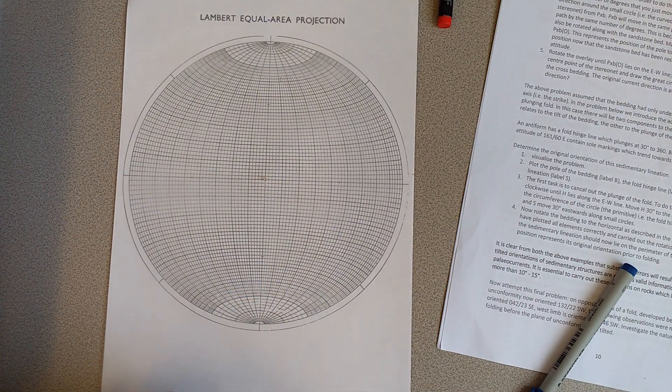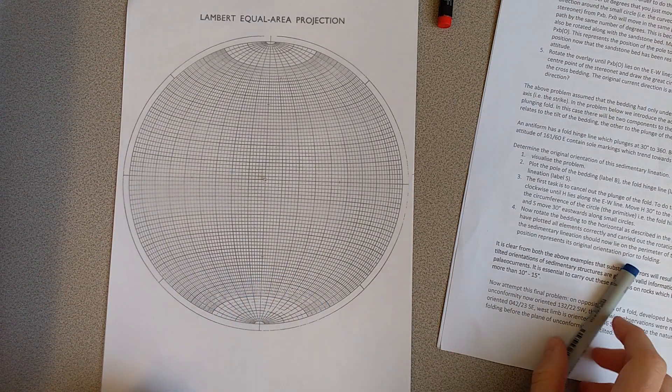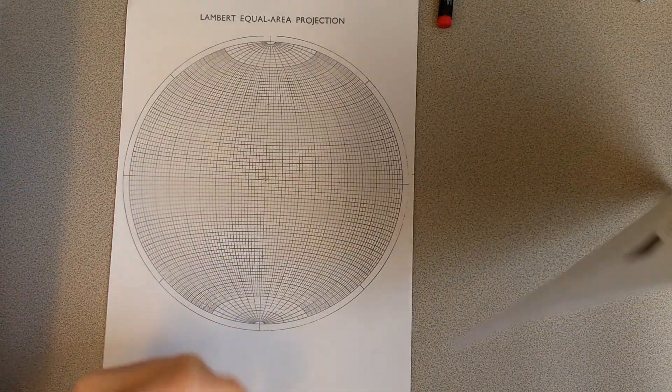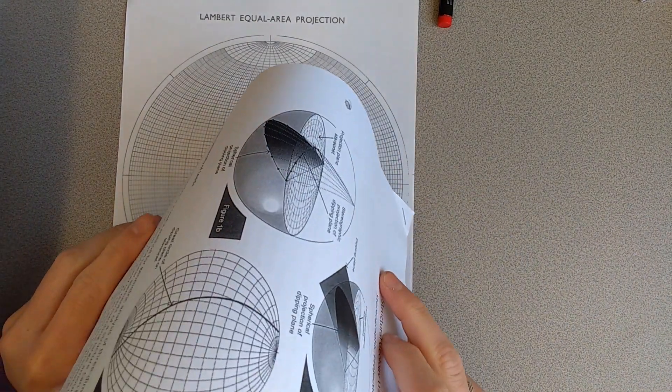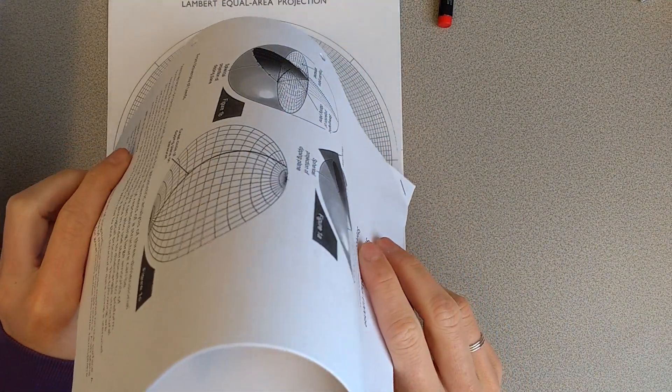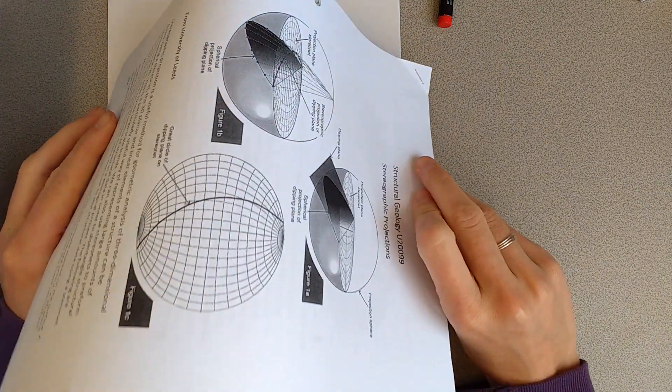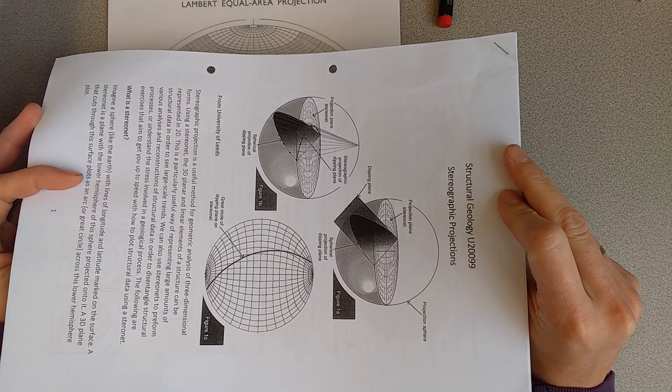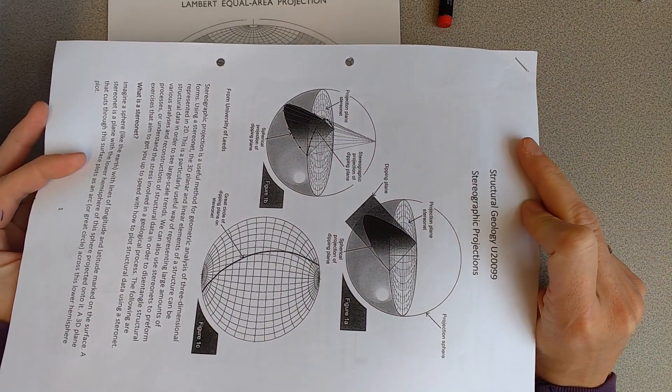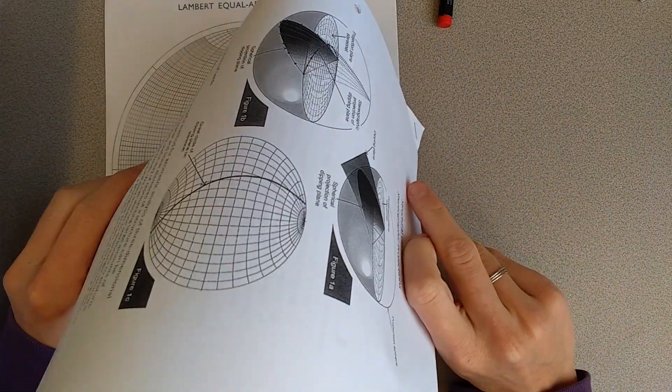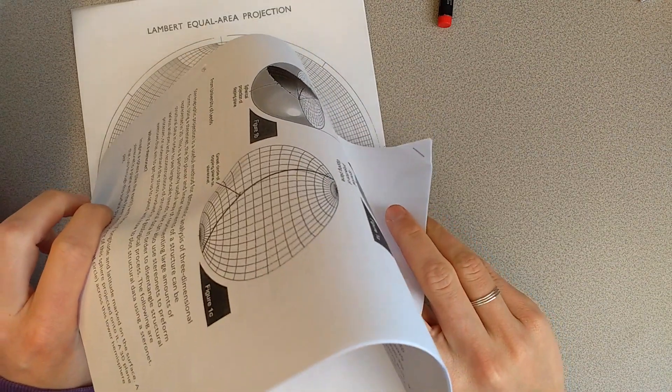I'm going to show you the next part of the exercise with drawing beds and this time we're looking at folded and plunging strata. So what we're going to do is we're going to un-plunge it and we're going to unfold it in order to work out the original direction of features which are on this folded and plunging data set.